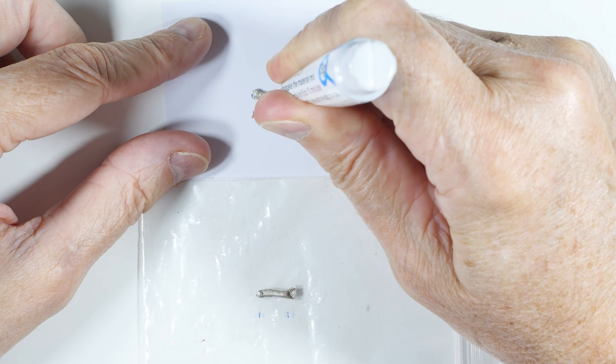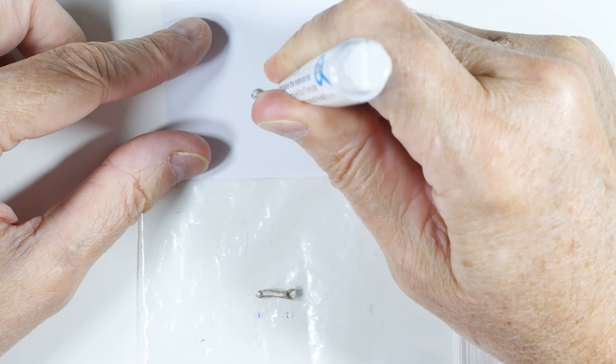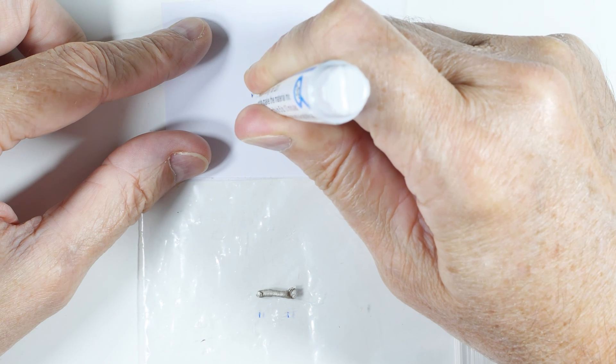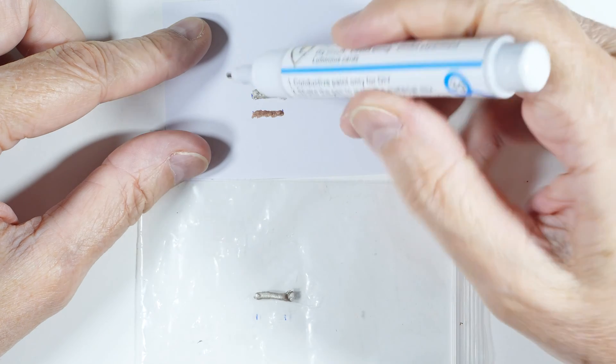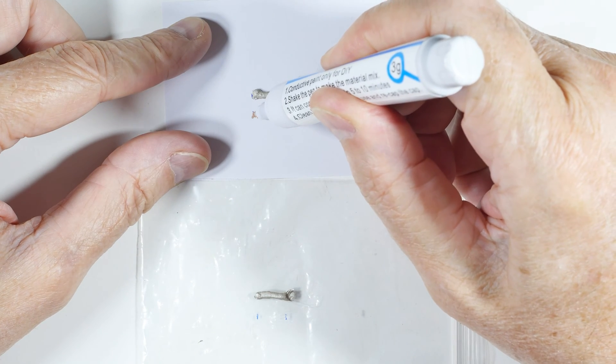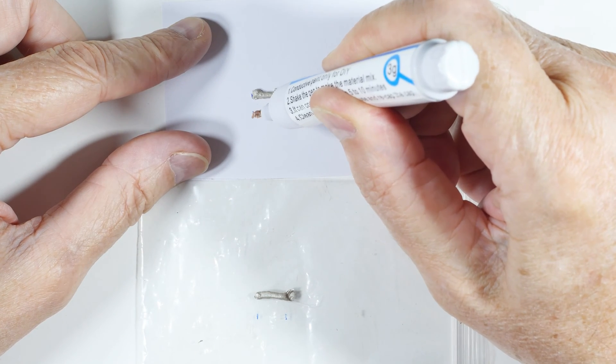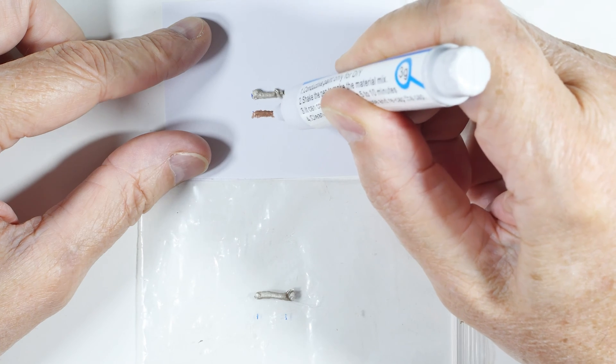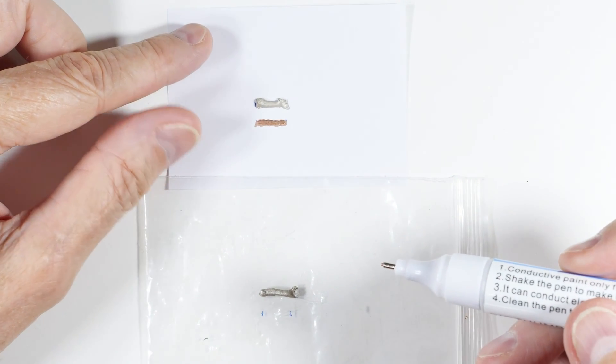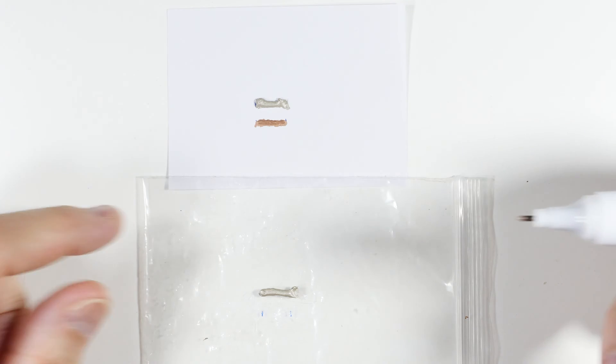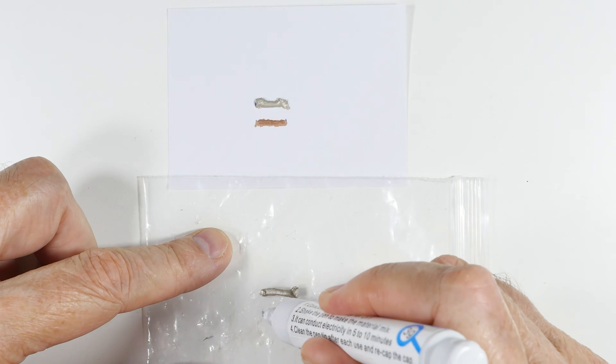Now this stuff doesn't want to come out. I'm not sure this is going to be fair because this one's coming out very thin and the other one came out very thick, so that will definitely affect resistance. Okay, so that's paper. Now let's do the plastic.